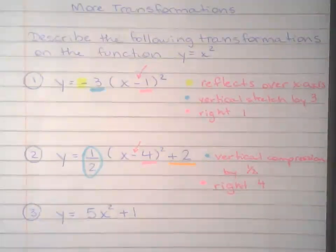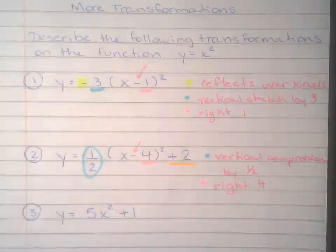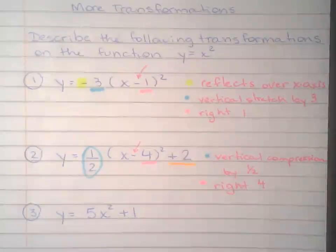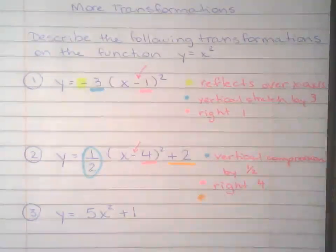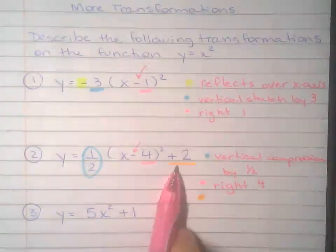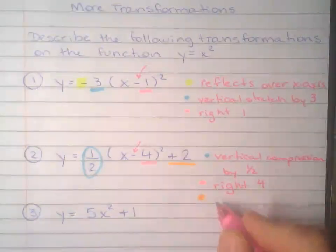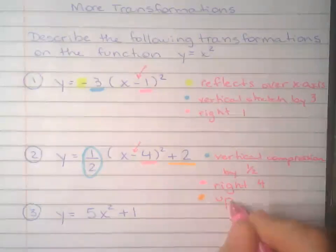That means that four is making the parabola shift right four units. And then k right there in orange, that goes up and down. Since k is positive, it goes up. So up two units. And that's all there is to it.